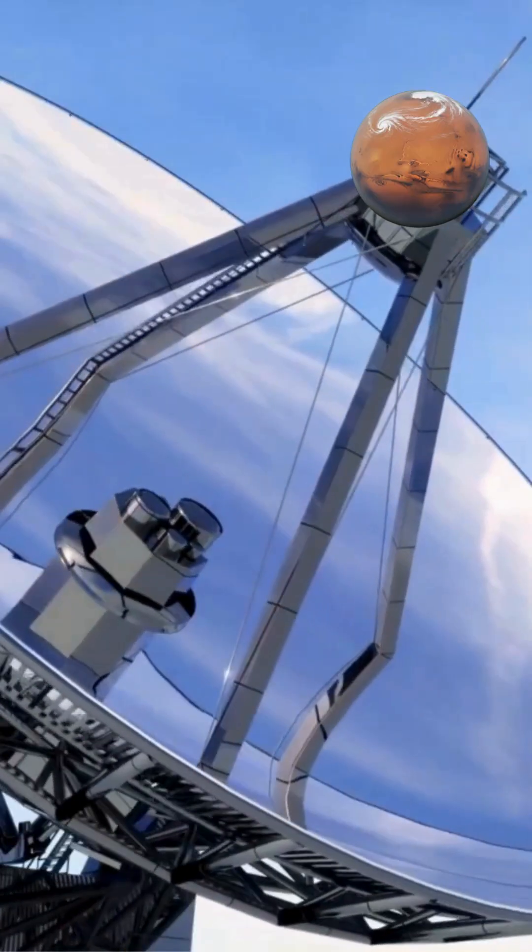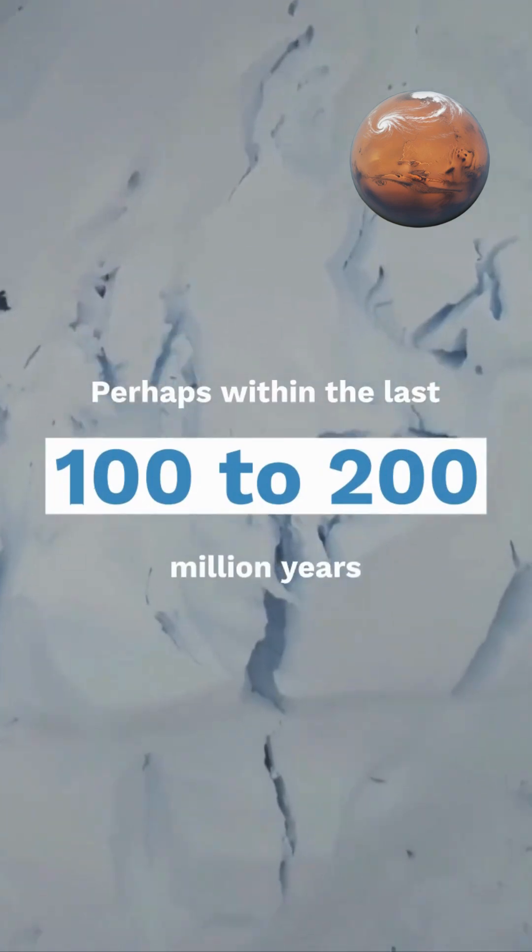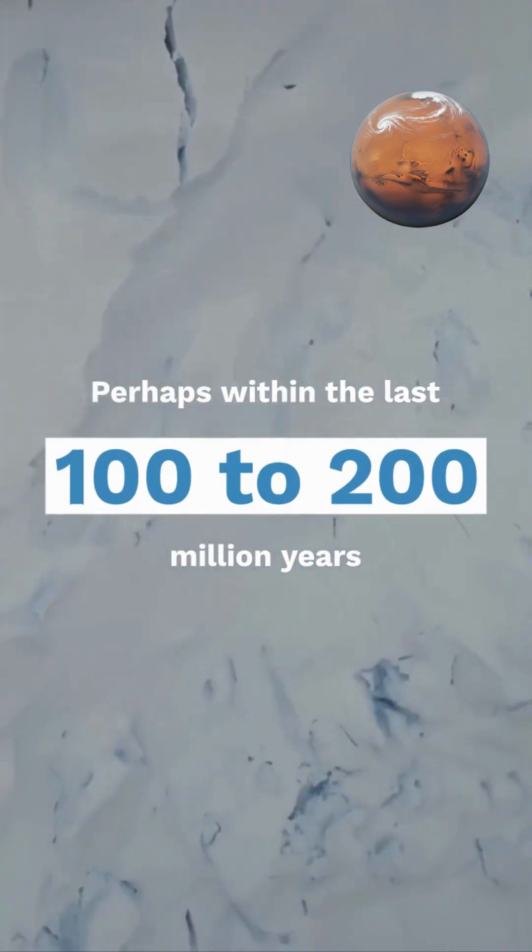Saturn's rings likely formed relatively recently in astronomical terms, perhaps within the last 100 to 200 million years.